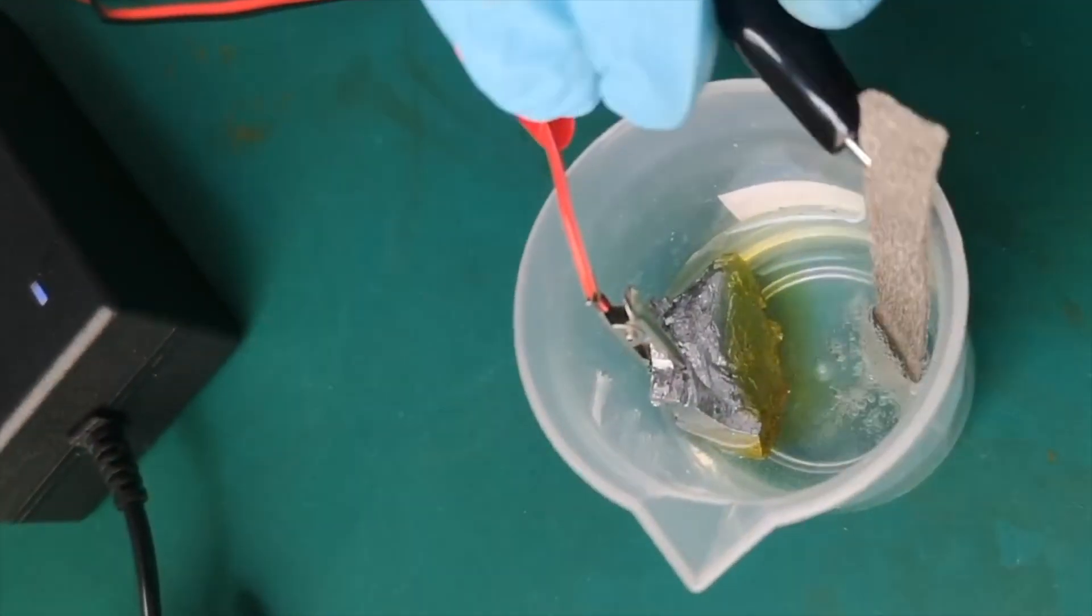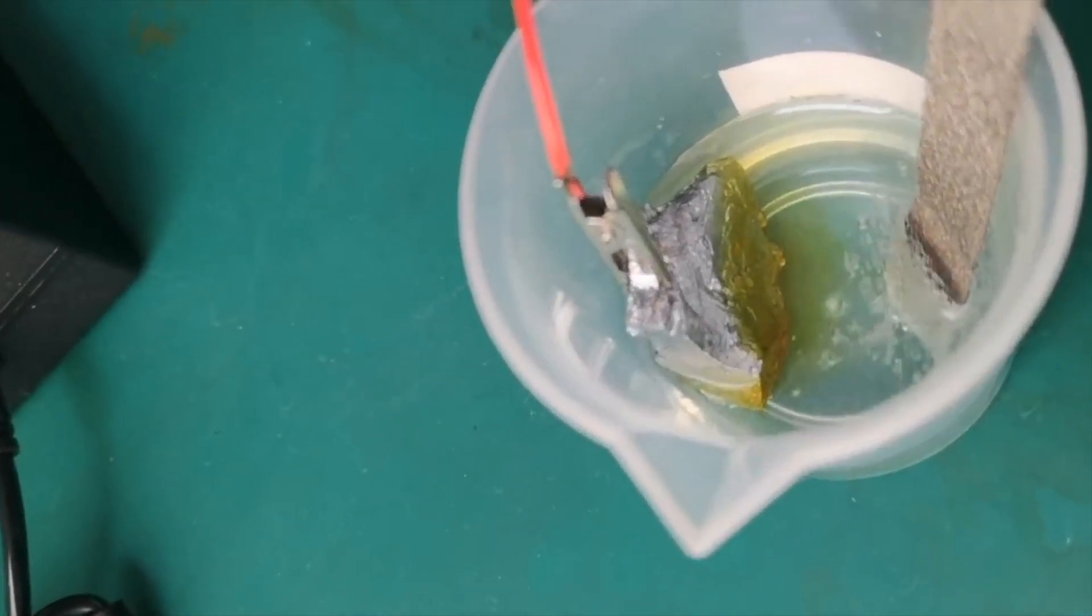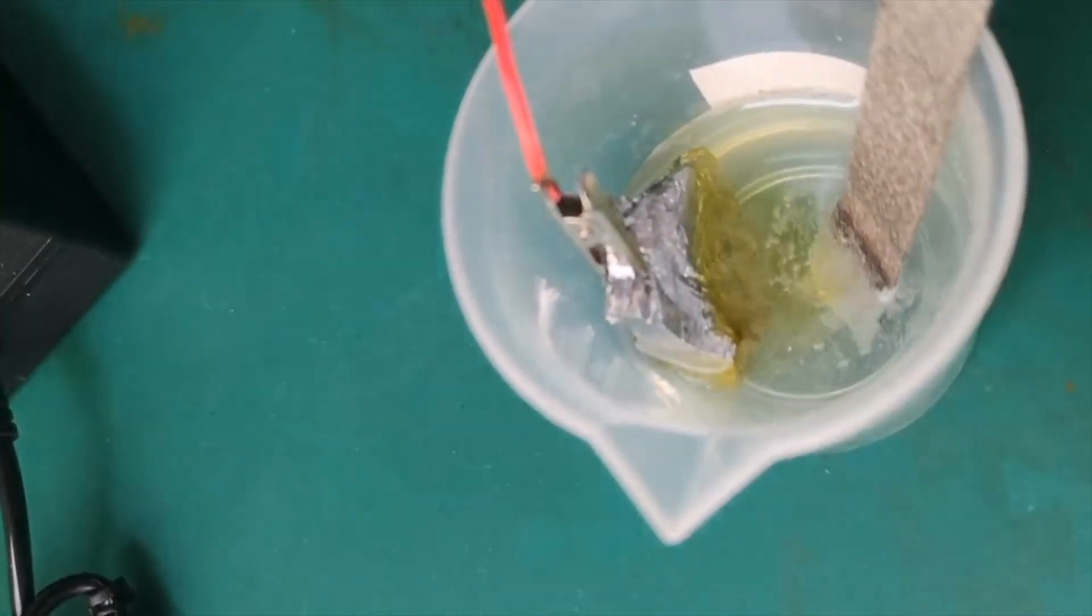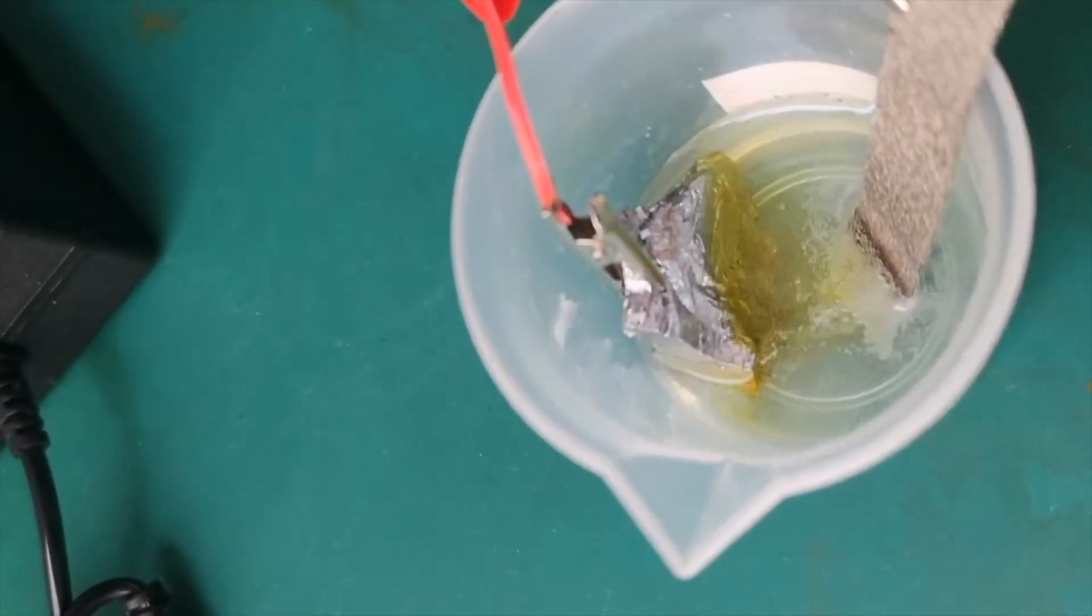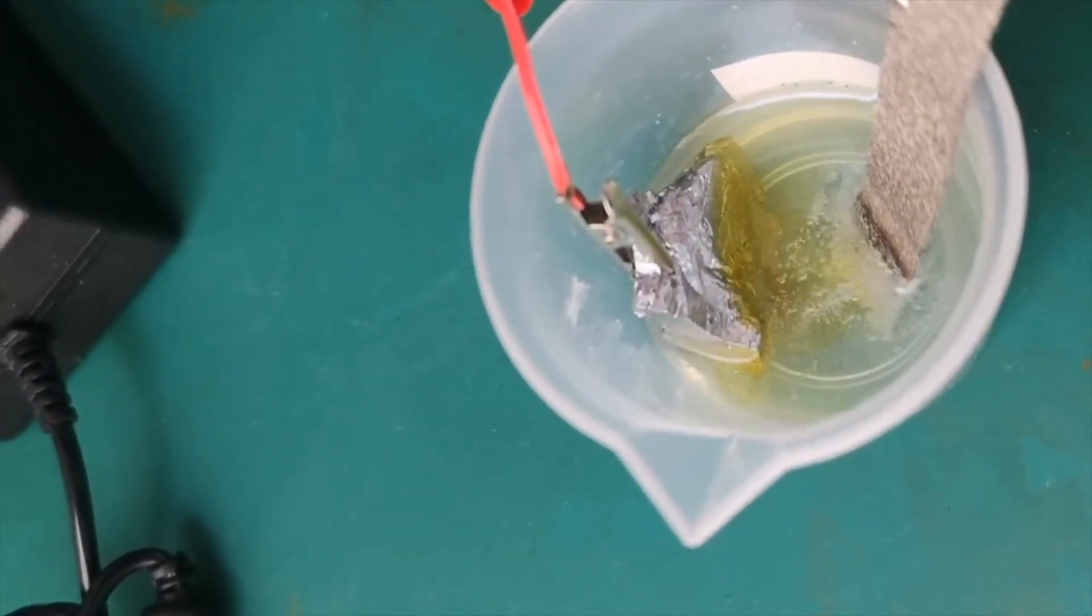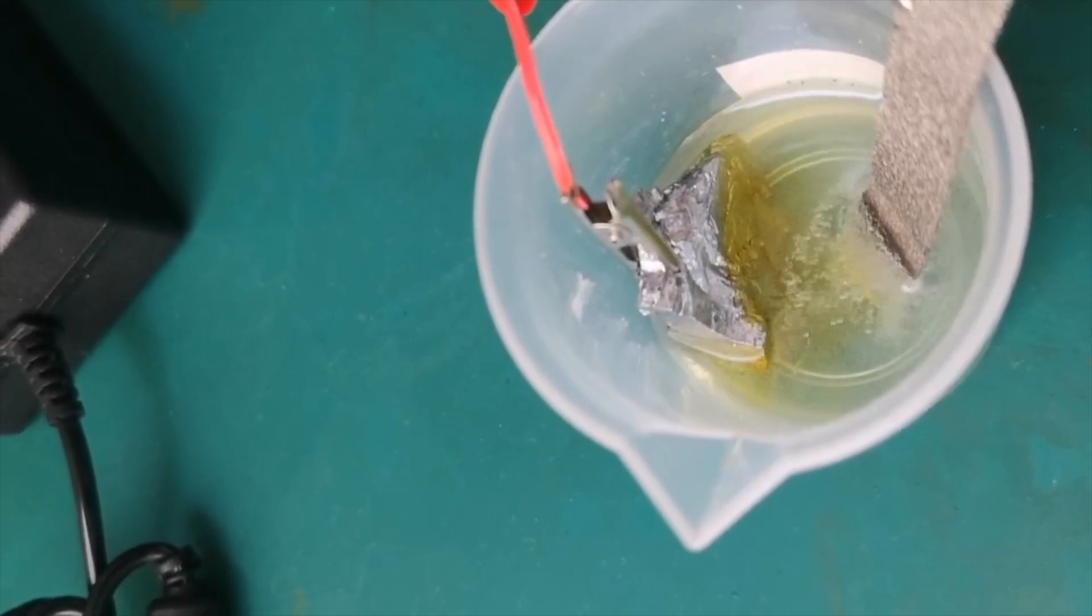As I switch on the power supply again, the cathode produces a lot of bubbles while the anode shows an orange-yellow color. The chromium is oxidized to chromic acid on the anode and dissolves into the solution.